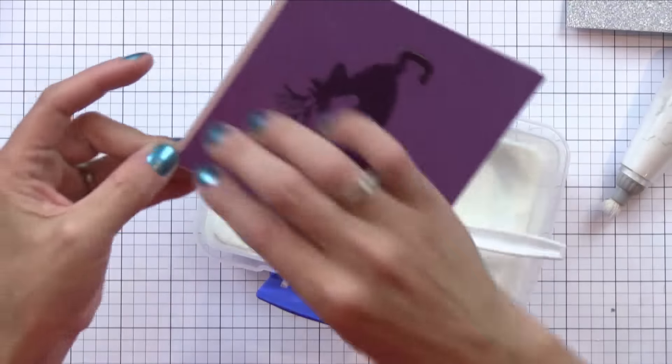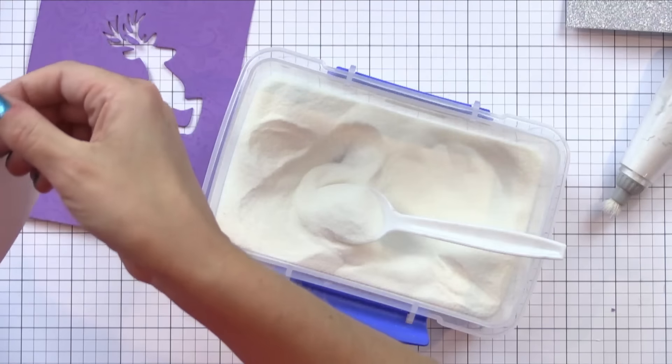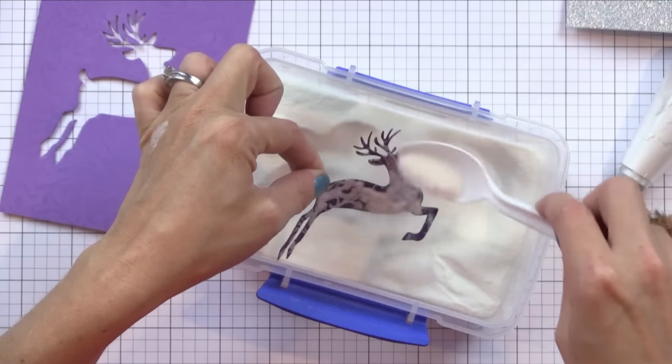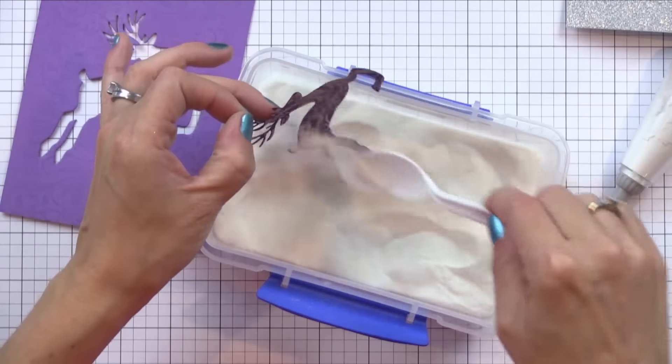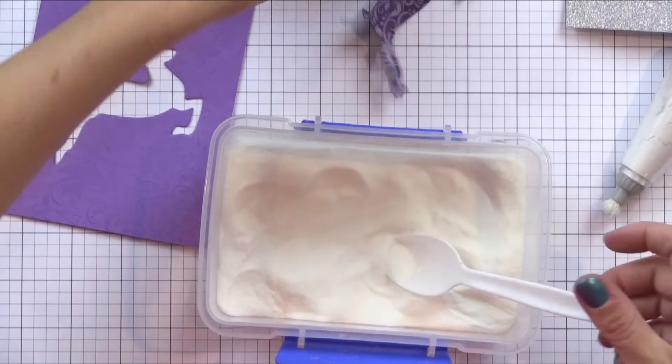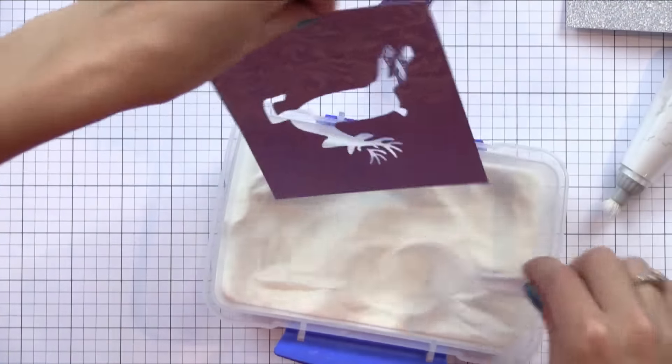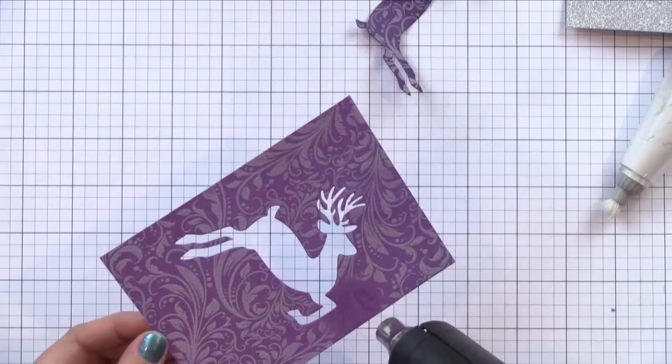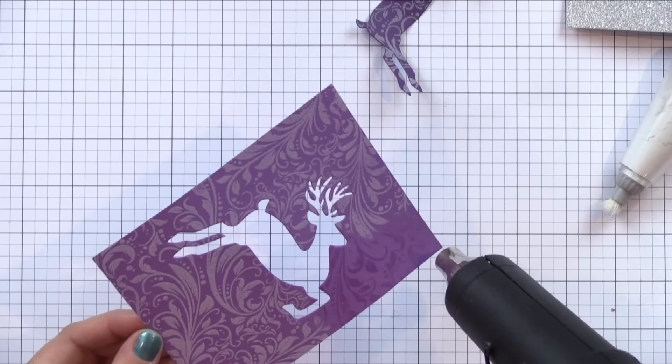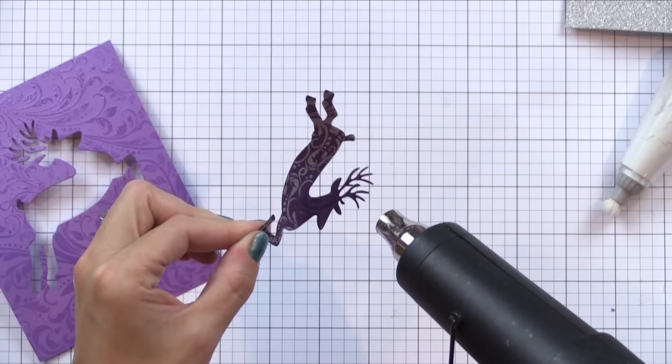So I'm pressing the VersaMark ink onto the front of it and then I'm going to add a clear embossing powder but I'm first going to take it apart. The reason I do this is that if I just poured clear embossing powder on the front of this, the embossing powder would get into the cracks and it would give this edge look to it which would be cool but I want a continuous pattern over the background and the reindeer. So I'm taking the reindeer out, putting embossing powder on it separately, then I'll put embossing powder onto the background. By separating them I get a clean continuous pattern without any messy edges.